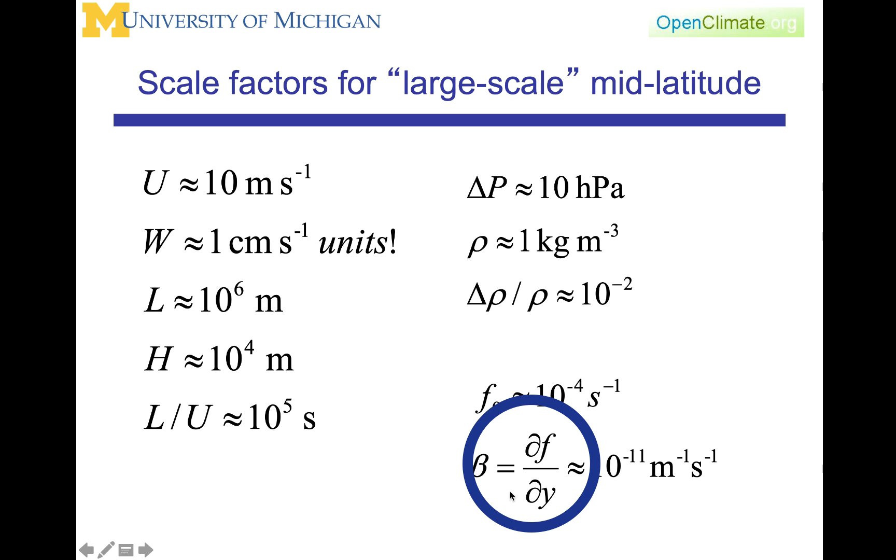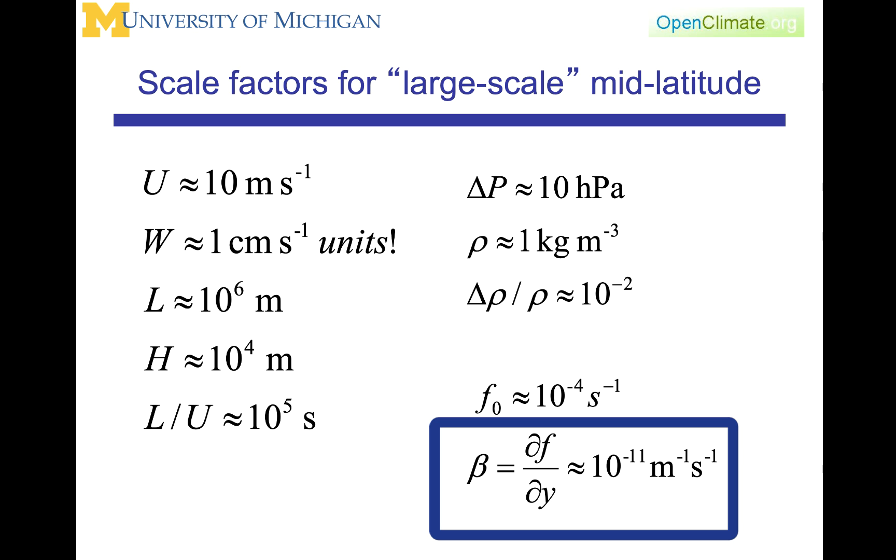though not use immediately, this other parameter, df/dy, which is the meridional or the y gradient of the Coriolis term, which will be called beta. And that quantity is 10 to the minus 11 over meter seconds, or 10 to the minus 11th per meter per second.